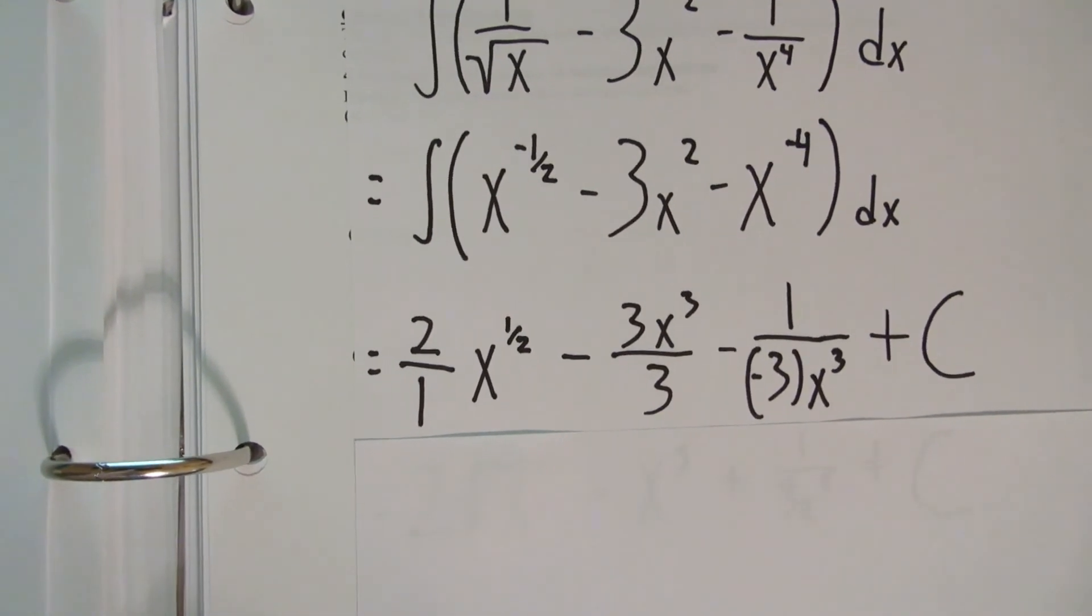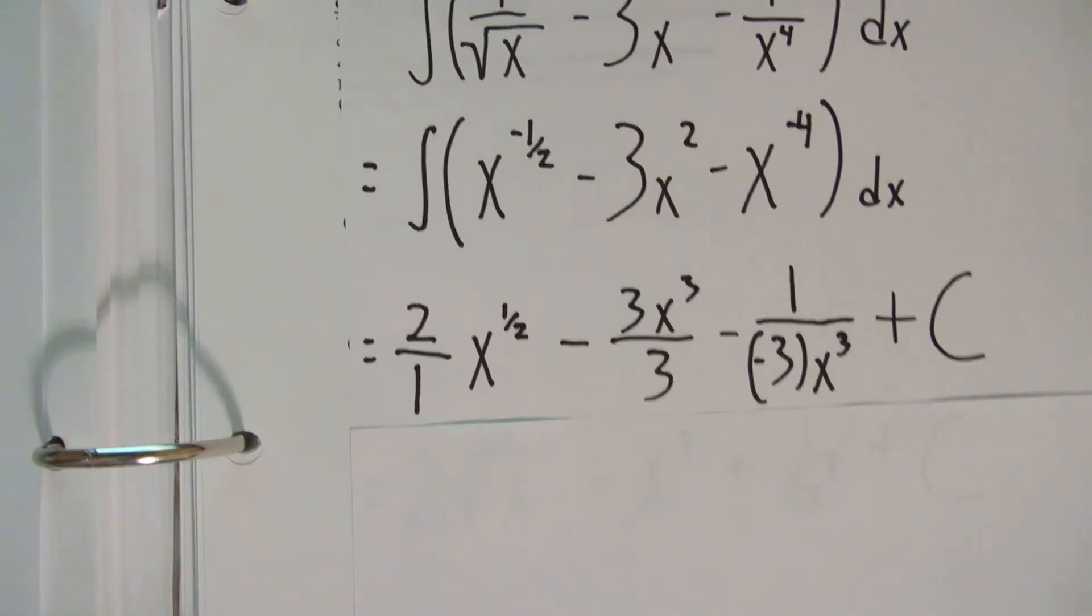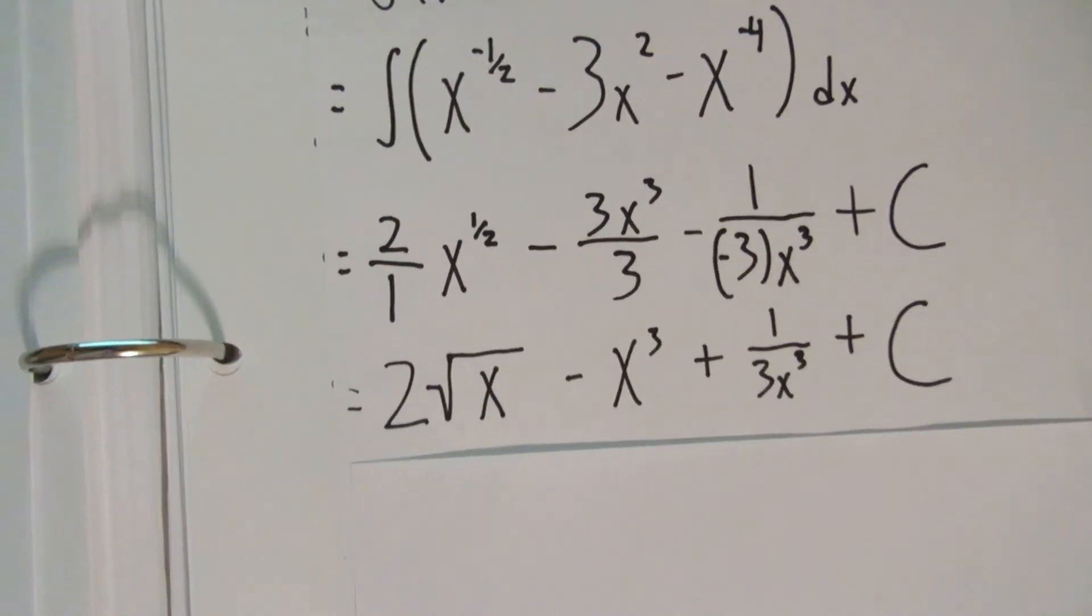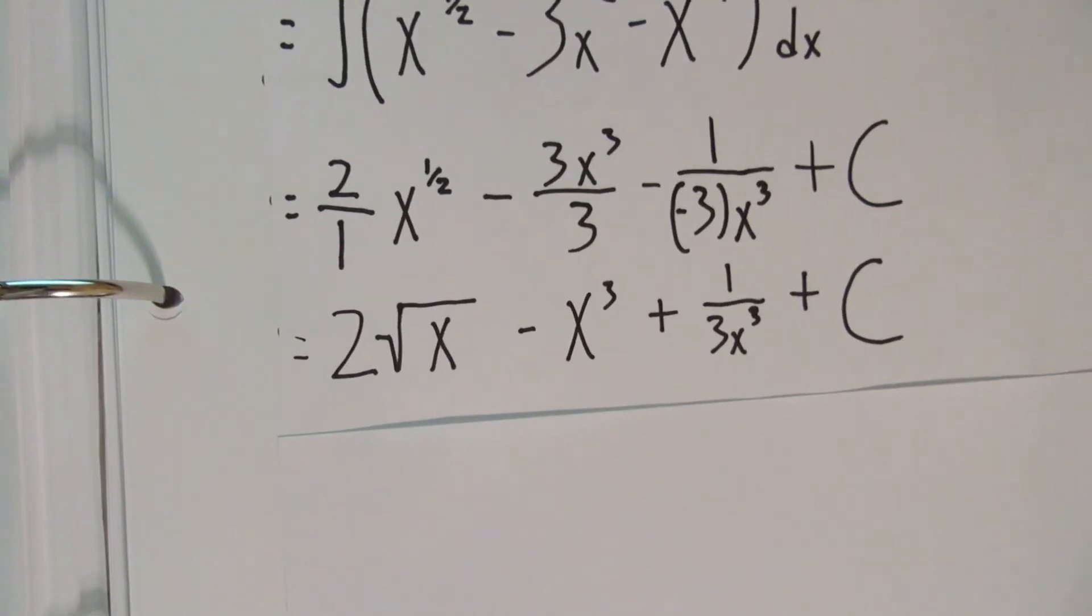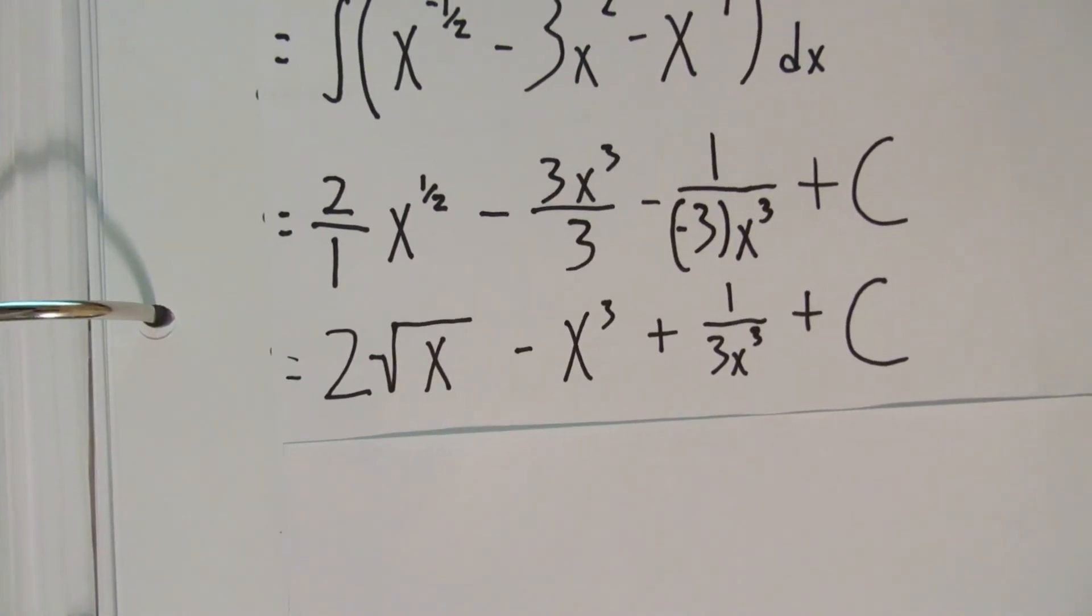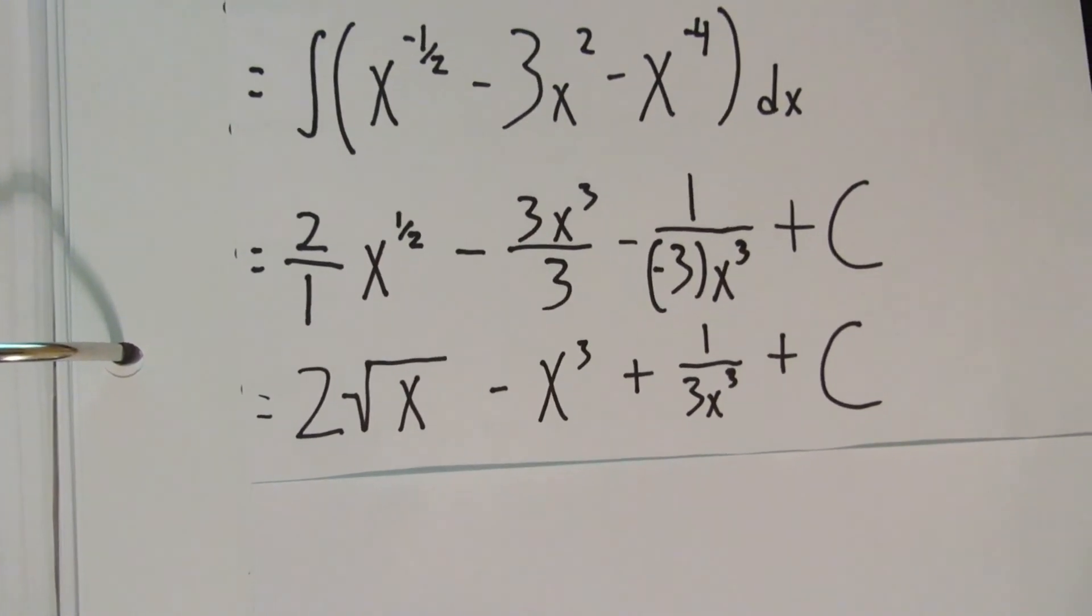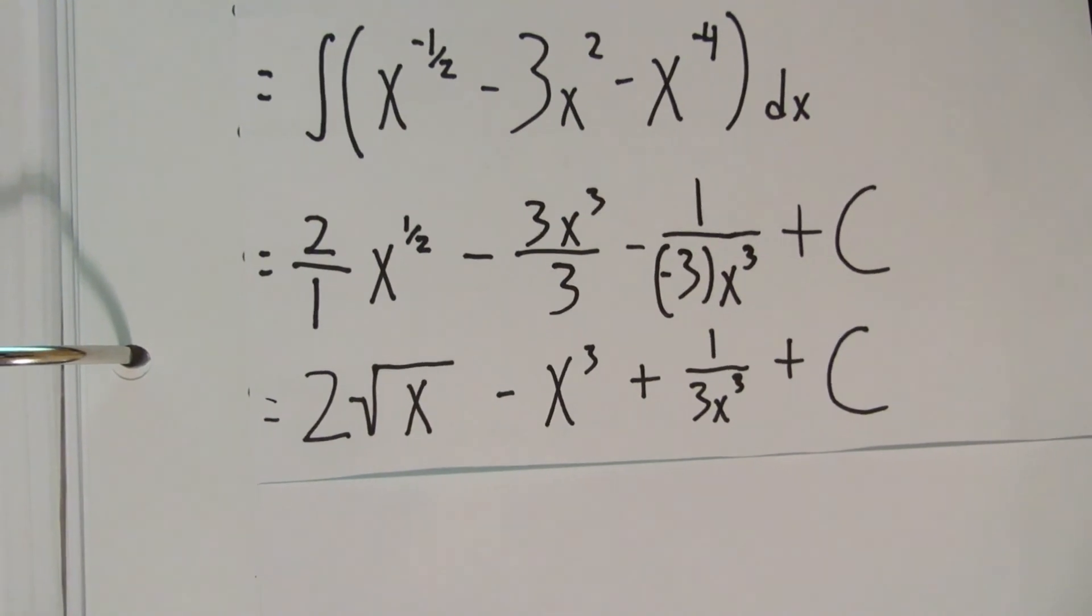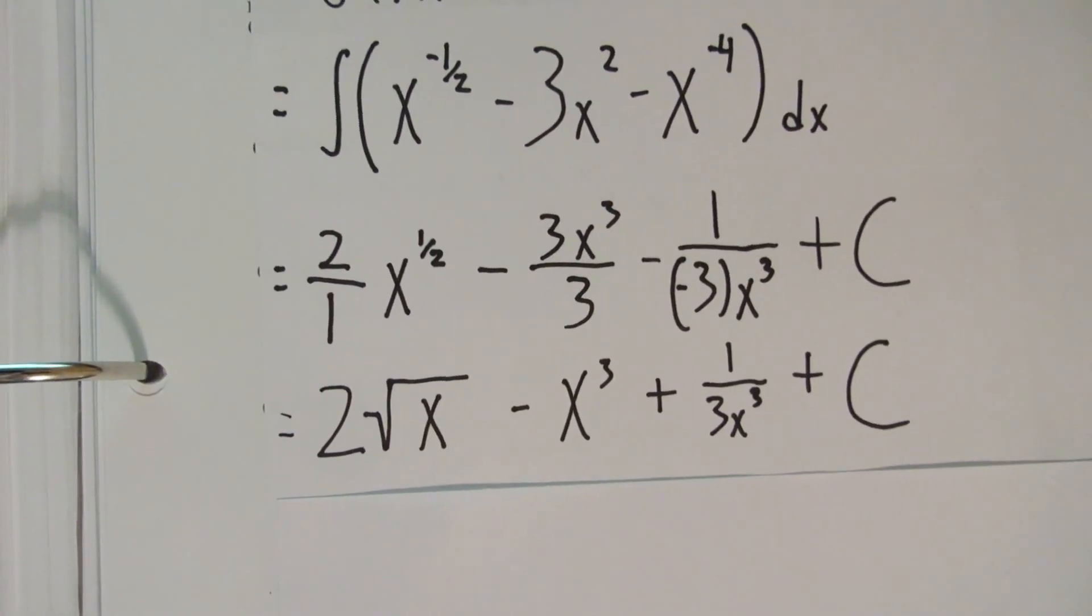And now that you've got it, all you have to do is write it into a simpler form, which I did here. Which would be 2 square root of x minus x to the third plus 1 over 3x to the third plus C. And that is your answer. Thank you.